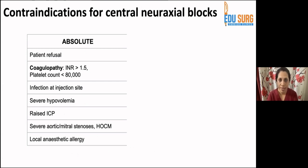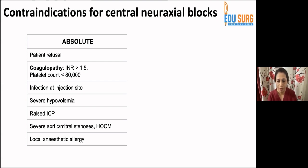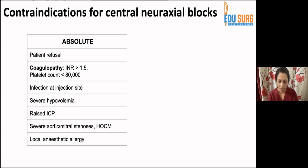Regarding contraindications for central neuraxial block — peripheral blocks have more lenient guidelines. With widespread ultrasound use today, many previously blind-technique contraindications are removed, as vessels are visualized. Even with documented pre-existing neurological defects or peripheral neuropathy, peripheral nerve blocks may still be performed.